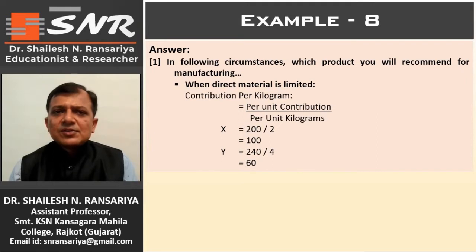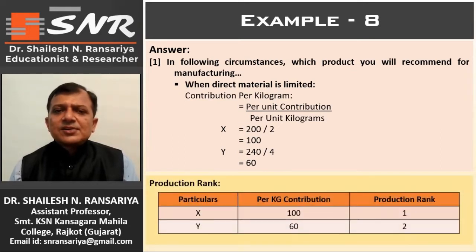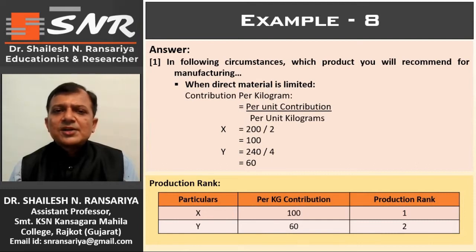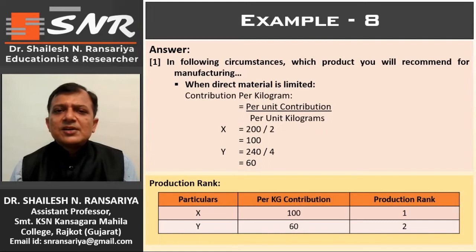Comparing contribution per kilogram: Product X gives rupees 100 per kg while Product Y gives rupees 60 per kg. So Product X has the higher contribution per kilogram. Therefore, first production rank is given to Product X and second rank to Product Y.